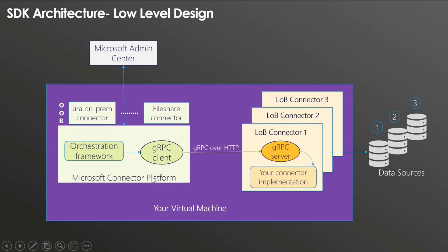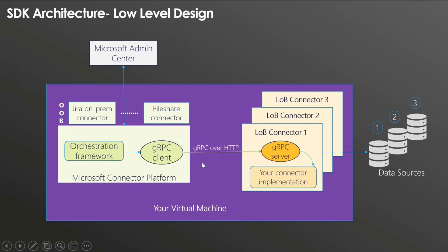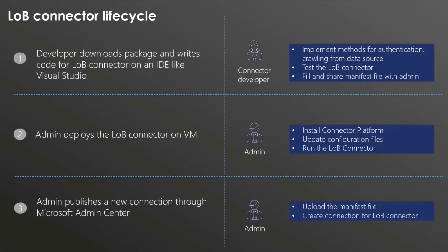The gRPC server hosts your connector implementation code, and you can have multiple connectors talking to the same connector platform. Install one Microsoft Connector Platform and have three different data sources with line-of-business connectors — or even out-of-the-box connectors — all running and talking to that single connector platform. These should reside on the same virtual machine, and you define the port over which each connector is running so the gRPC client can talk to each server by updating the configuration file.